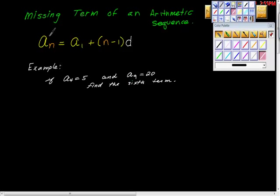Let's be reminded that the nth term of an arithmetic sequence is the first term plus n minus 1 times d, where d is the common difference.